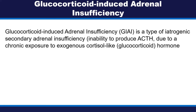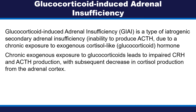Glucocorticoid-induced adrenal insufficiency is a type of iatrogenic secondary adrenal insufficiency, which is characterized by inability to produce ACTH due to chronic exposure to exogenous cortisol-like hormone. Chronic exogenous exposure to glucocorticoids leads to impaired CRH and ACTH production with subsequent decrease in cortisol production from the adrenal cortex.